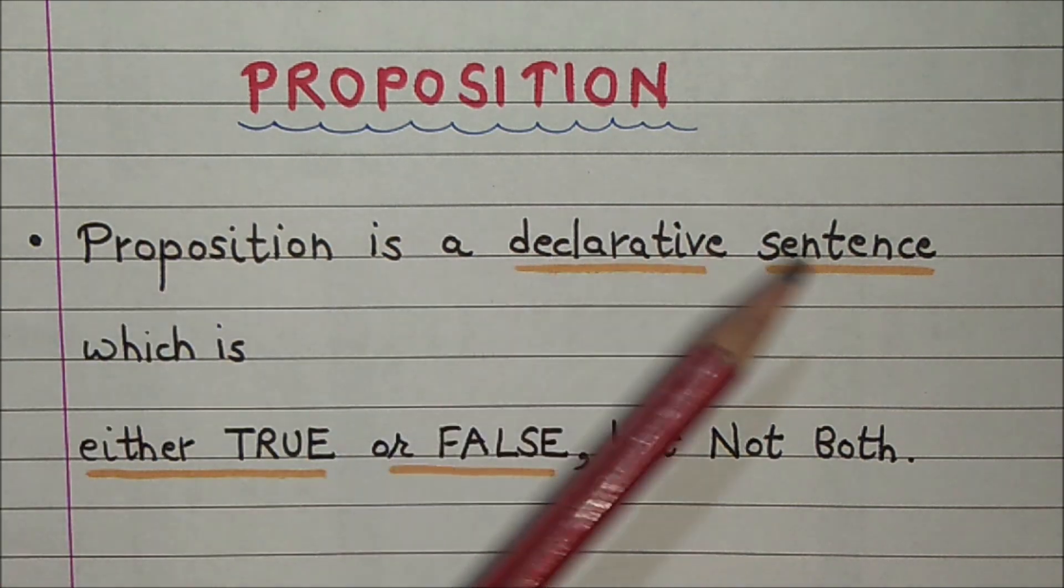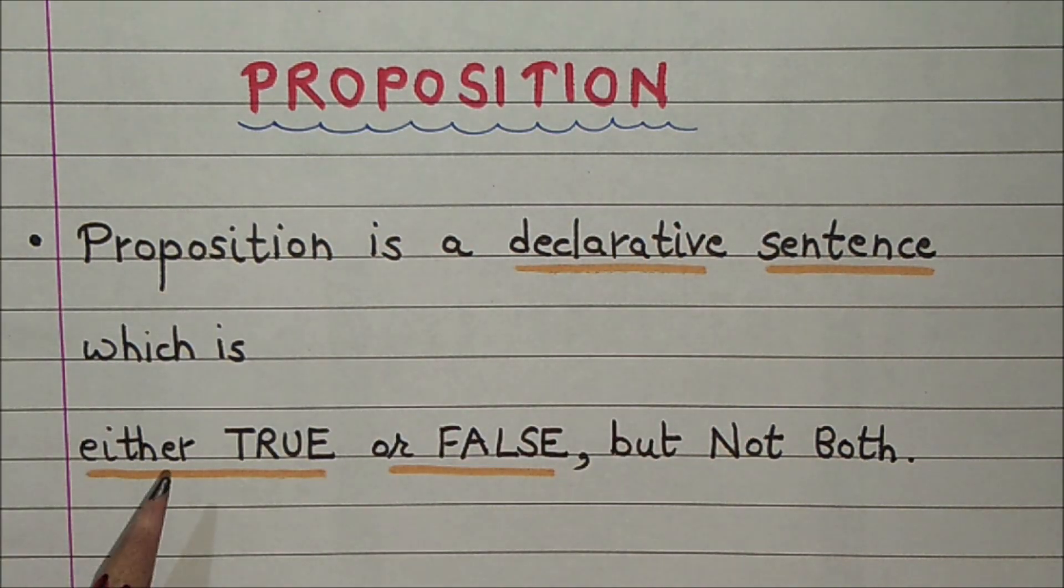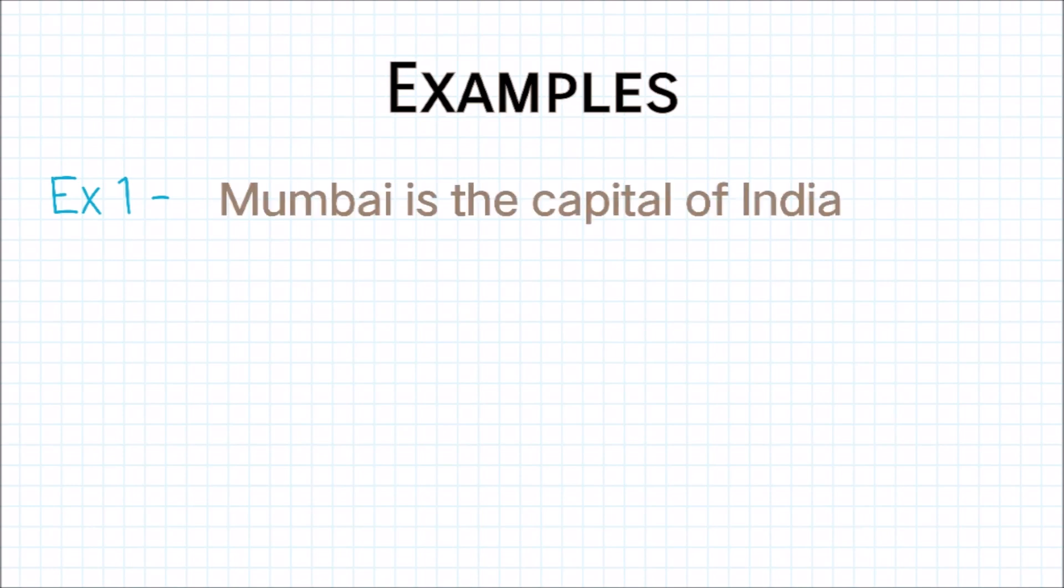So Proposition is a declarative sentence which is either true or false but not both. Let's see some more examples. Example 1: Mumbai is the capital of India. This is a Proposition because this sentence is false.